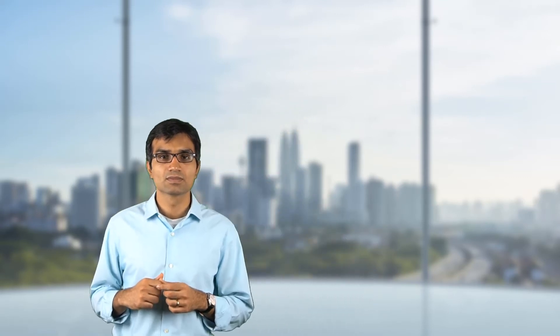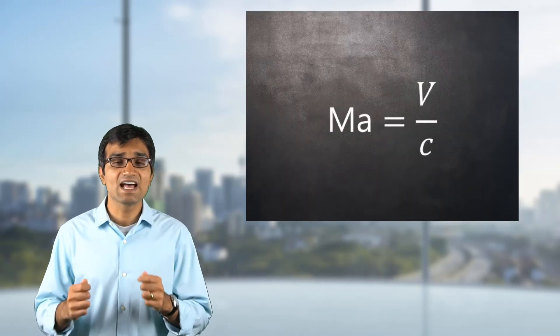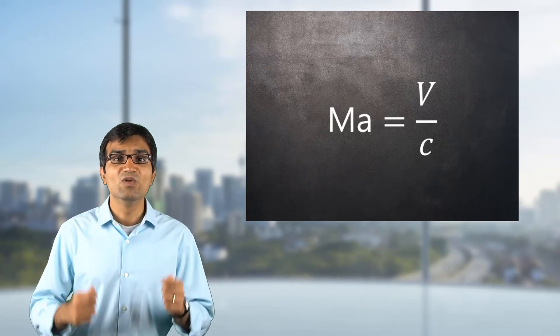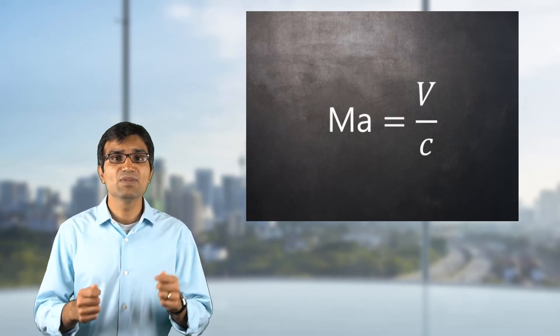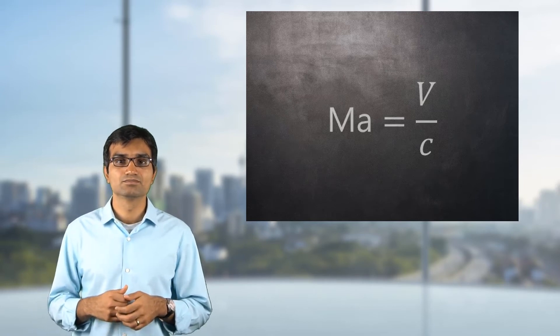A compressible flow can be further classified based on its velocity compared to the speed of sound in that medium. Mach number, which is defined as the ratio of fluid velocity to the speed of sound in that medium, provides this comparison. Subsonic flows have a Mach number less than 1, whereas supersonic flows have a characteristic Mach number greater than 1. When transitioning from subsonic to supersonic, these flights occasionally show what is known as a sonic boom.